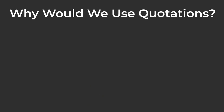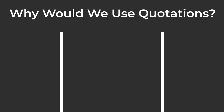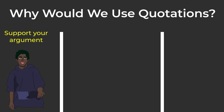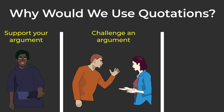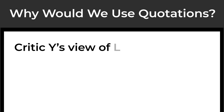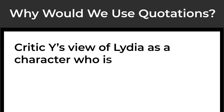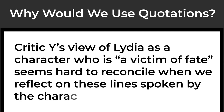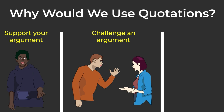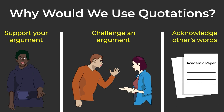Why would we use quotations? There are three primary reasons. First, to support your argument or a particular point you're making. Second, to challenge someone else's argument — for example, critic Y's view of Lydia as a character who is "a victim of fate" seems hard to reconcile when we reflect on these lines spoken by the character herself. Third, you can also use a quotation to acknowledge to your reader that the words you are using are not your own.